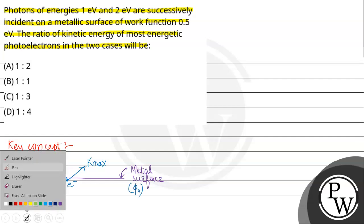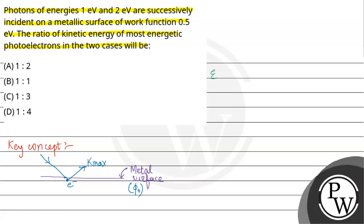From Einstein's photoelectric equation: K_max equals incident energy minus work function.